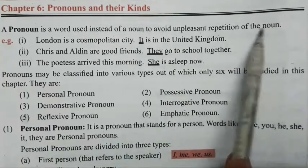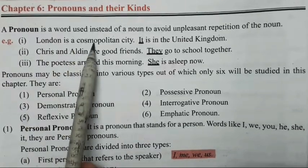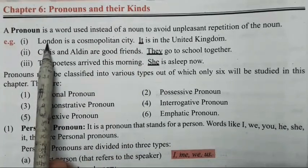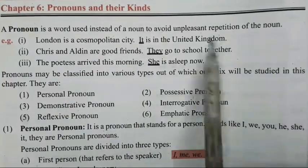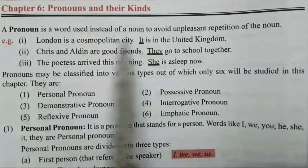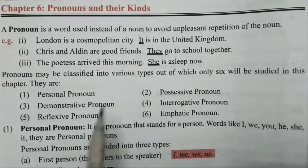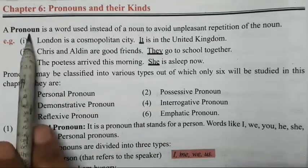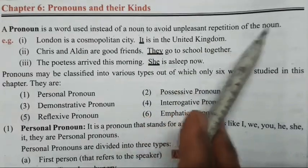To avoid unpleasant repetition of the noun. For example, 'London is a cosmopolitan city. It is in the United Kingdom.' So 'it' matlab London hota hai — that is a pronoun. Hum yahan pe London ke jagah pe 'it' use kar rahe hai. Matlab wapas wapas wahi naam use karne se achcha hai — agar ek baar naam use kar liya hai, toh next time hum ushe it, they, she, he se represent kar sakte hai. So a pronoun is a word used instead of a noun to avoid unpleasant repetition of the noun.